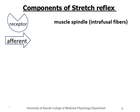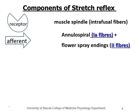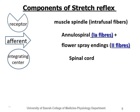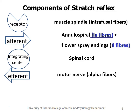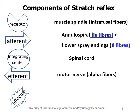The afferents reach the dorsal root and enter the spinal cord integrating center, where synapses occur to send signals to the efferent motor nerves. Since the stretch reflex is monosynaptic, it goes from afferent directly to efferent motor nerves — named alpha and gamma. These go to the effector organ, which is the muscle that was stretched and will now undergo contraction. This muscle is called extrafusal, while the receptor is called intrafusal.